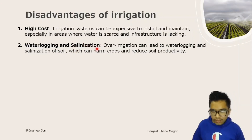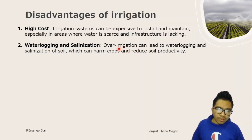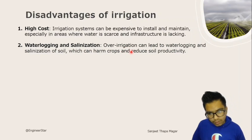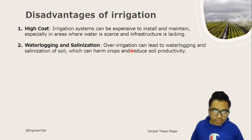Excessive over-irrigation causes salinization. Over-irrigation raises the water table, causing salts such as sodium, potassium, and magnesium to accumulate in the soil, which negatively affects crop roots and nutrient uptake.